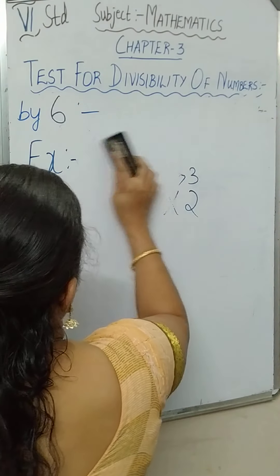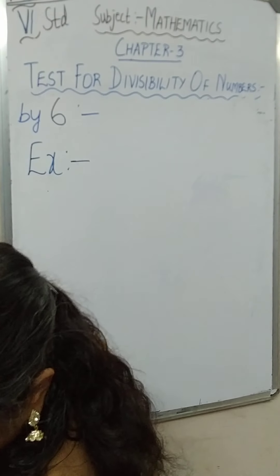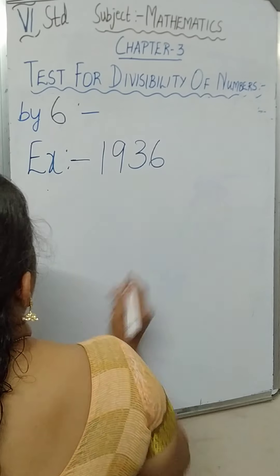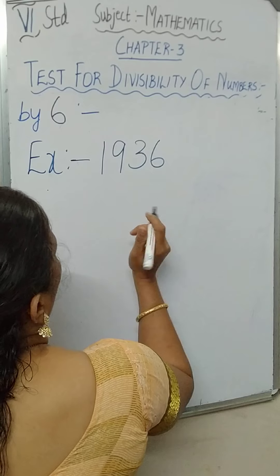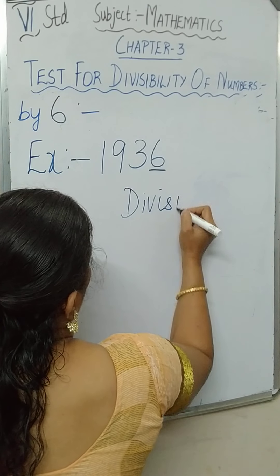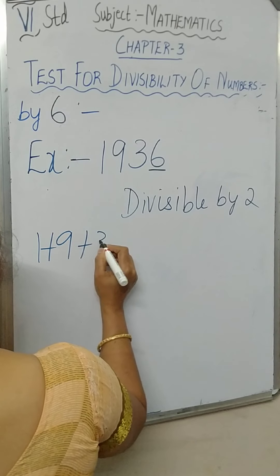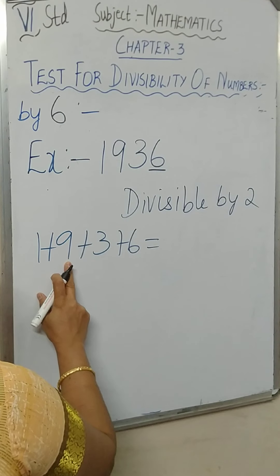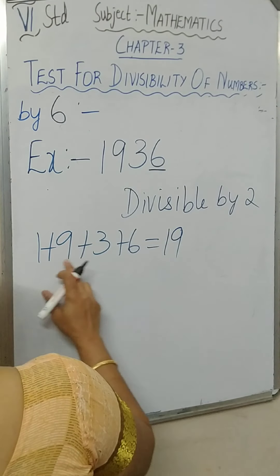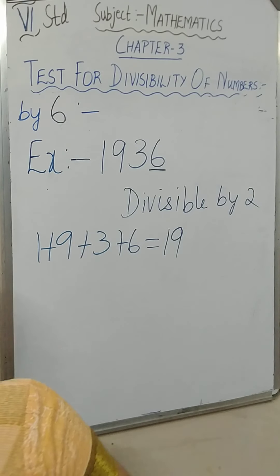Let us see another example: 19,036. Look at the digit in the ones place — it is 6, so it is divisible by 2. Now let us check whether it is divisible by 3: 1 plus 9 plus 3 plus 6. When you add these numbers: 1 plus 9 is 10, 10 plus 3 is 13, 13 plus 6 is 19. Is 19 a multiple of 3? No. So it is not divisible by 3, and therefore not divisible by 6 either.